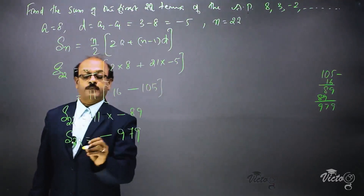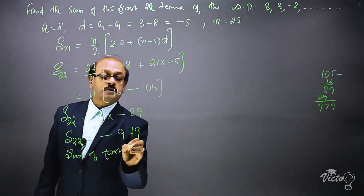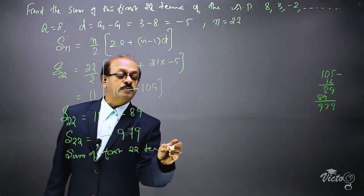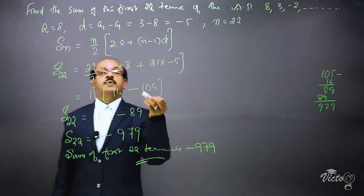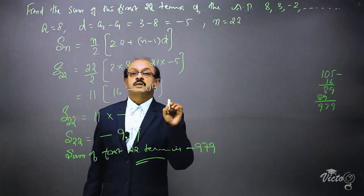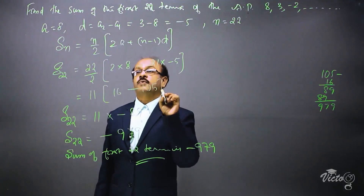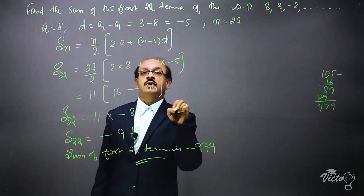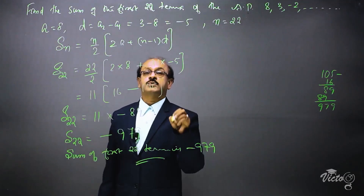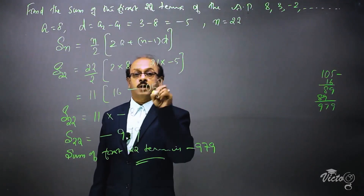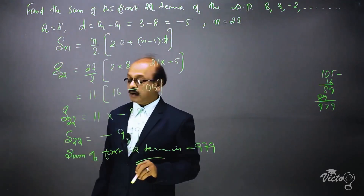It is very easy to find out the sum. The selection of the equation must be valid — if we select the equation in an apt way it is very easy to find the sum, otherwise it will be difficult. So be very careful when selecting the equation according to the given question. The answer is minus 979.